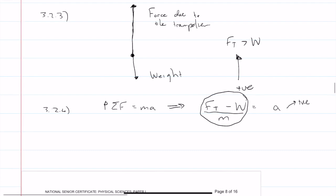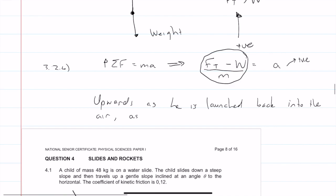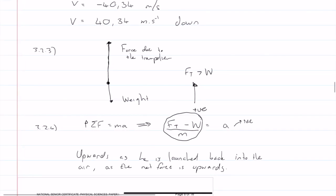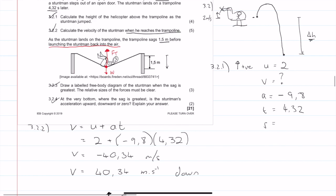Therefore, the answer here we would say upwards as he is launched back into the air. Or we could even say as the net force is upward. Either one of these is correct. So we get two marks for that and three marks for the free body diagram.